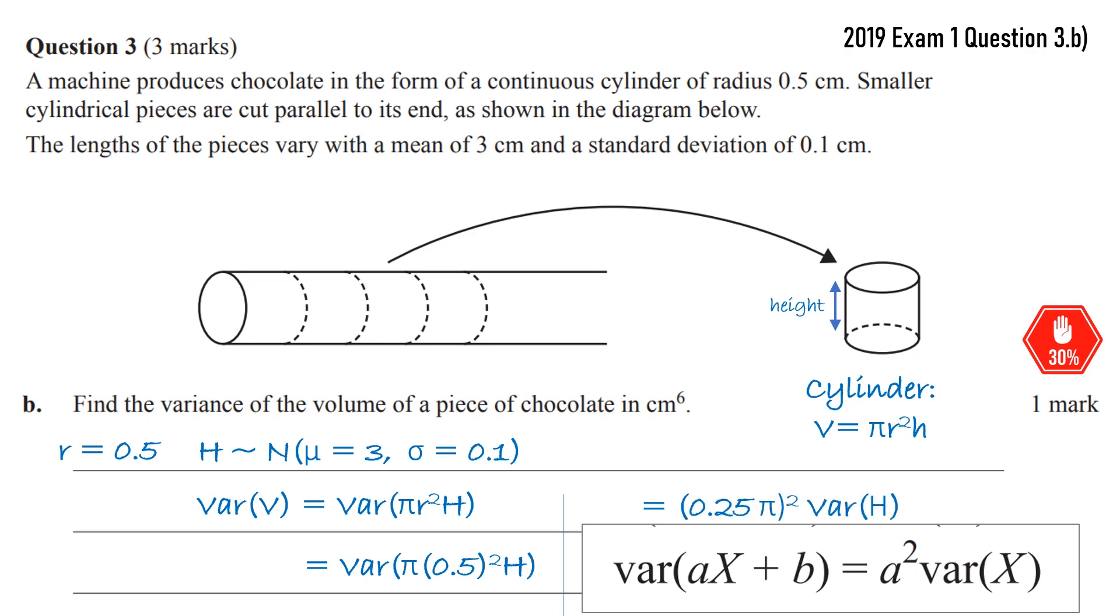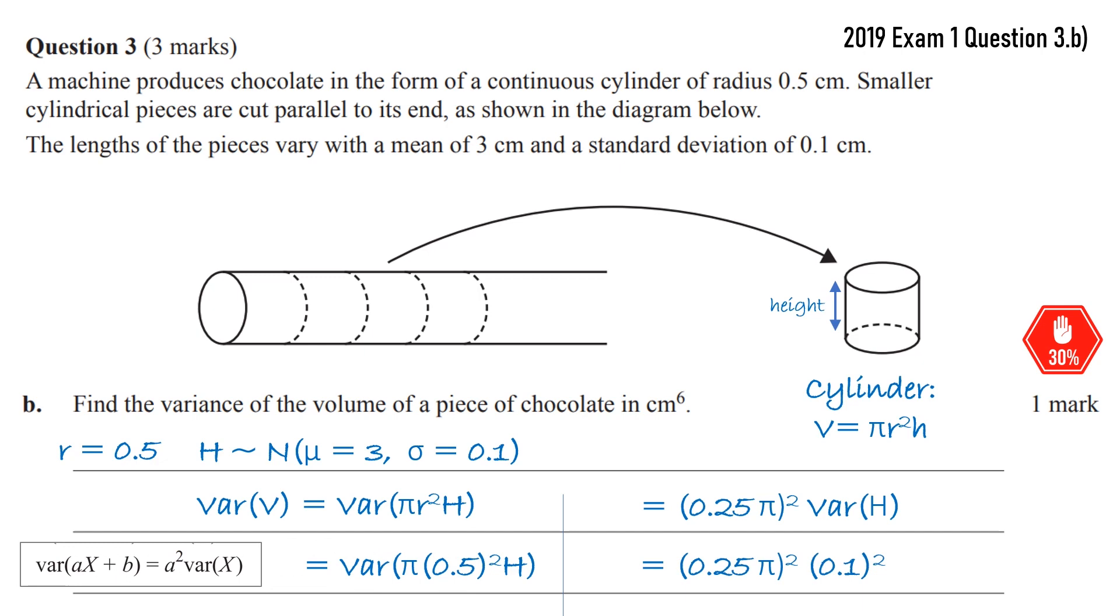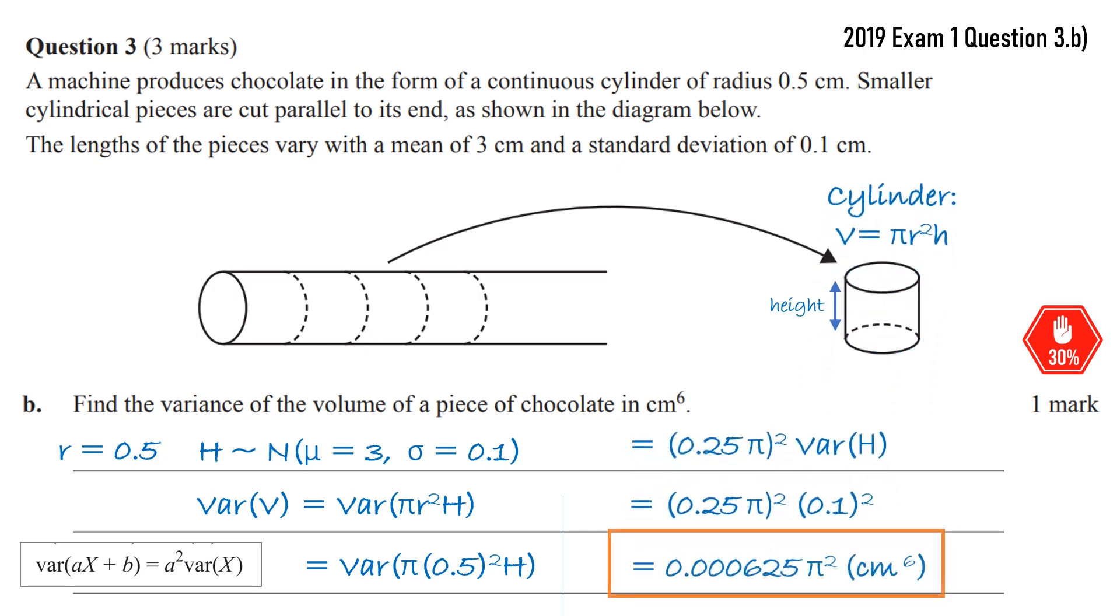We don't have a b but our a is essentially 0.25 pi. So we're going to take that out and square it and then times that by the variance of h. The variance of h is 0.1 squared so then we just need to calculate this thing with a lot of decimal places. It turns out to be 0.0000... There it is on the screen.